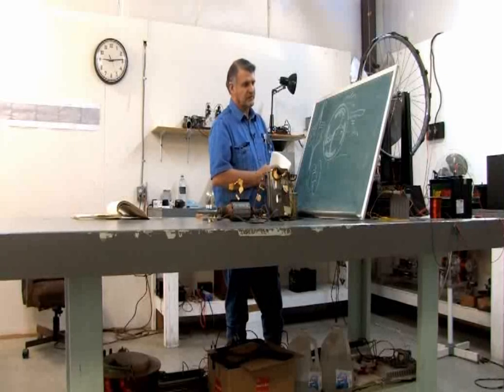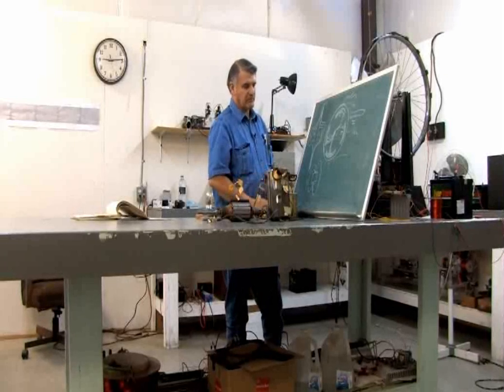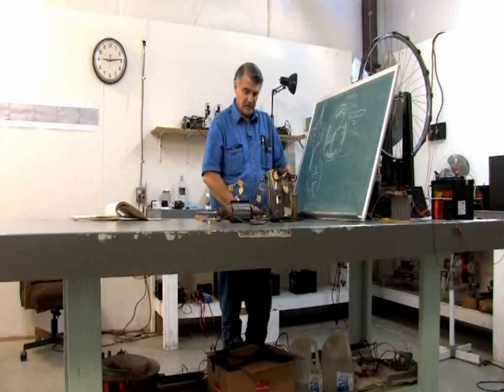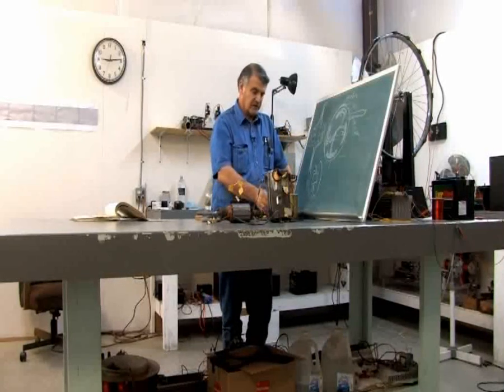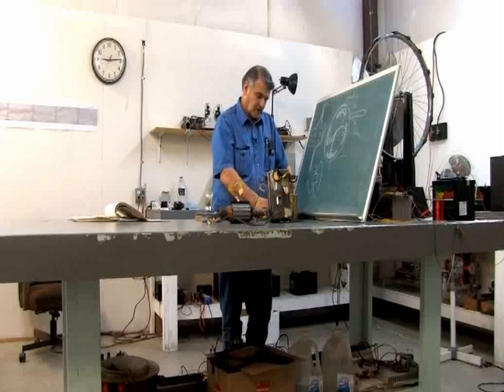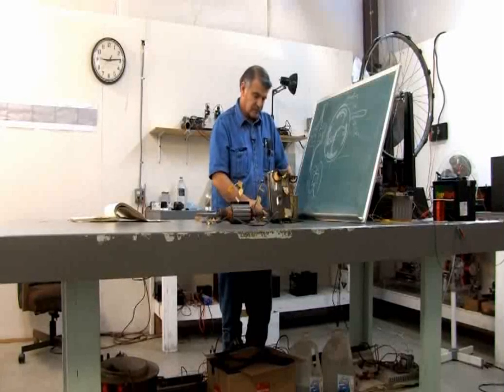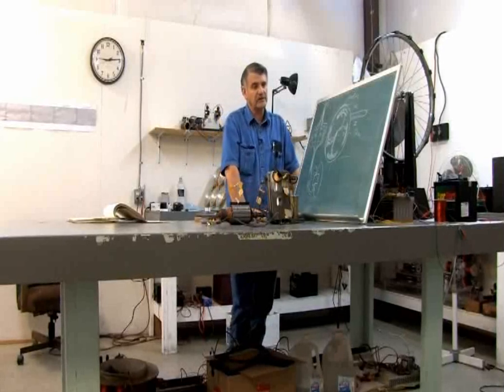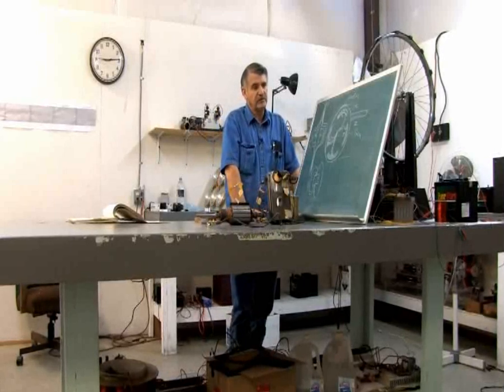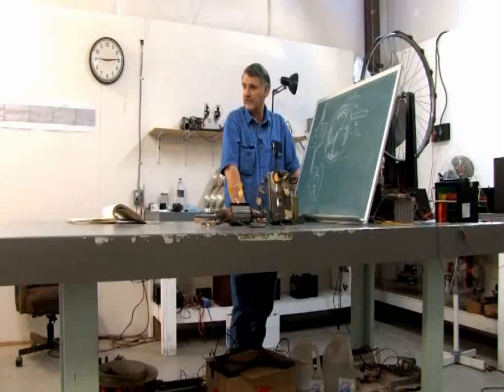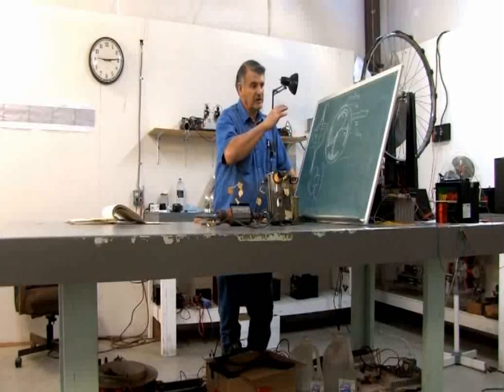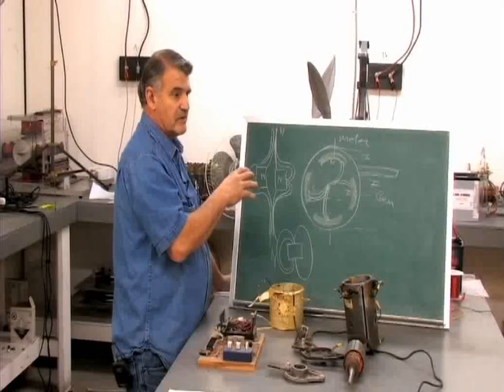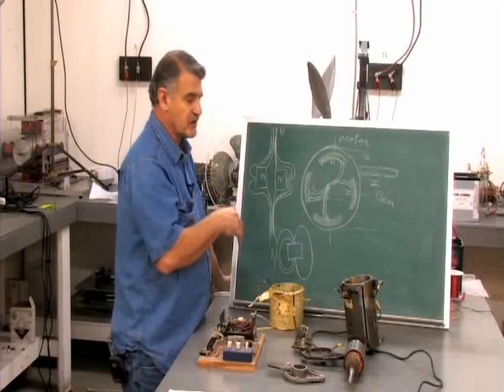But the problem with the Lockridge device was that, number one, even though it was an over unity machine, it only produced 300 watts of usable power while it's self-running. So if you maintain the 300 watt level, the machine continued to run until the brushes wore out.